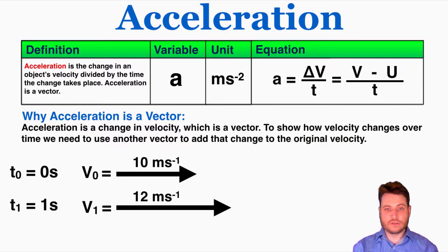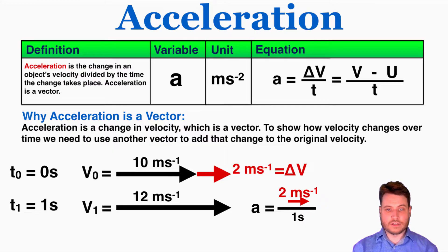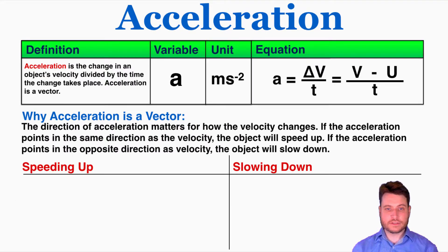We can describe the change in velocity as itself being a vector. If we connect the tip of the original velocity to the tail of the change in velocity, we can use vector addition to see how velocity changes into that new velocity. That red vector of 2 meters per second to the right is the change in velocity. Because acceleration is the change in velocity divided by time, that's also a vector — here, 2 meters per second squared to the right. If acceleration points in the same direction as velocity, the object speeds up; if opposite, it slows down.